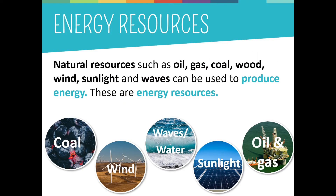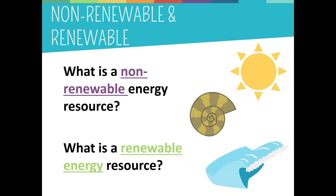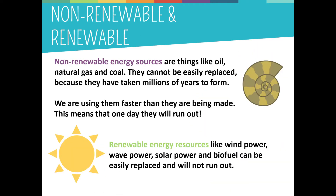Now let's see what is an energy resource. Energy resources such as oil, gas, coal, wood, field, sunlight are types of natural resources. They can be used to produce heat and electricity. Energy sources could be classified as renewable and non-renewable. Non-renewable energy sources are things like oil, natural gas and coal. They cannot be easily replaced because they have taken millions of years to form.